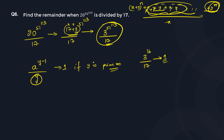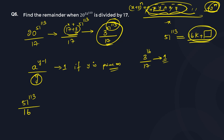But we do not have 3^16 directly. So we will try to convert the power of 3 in terms of 16. We want to find 51^113 — this is the power. Can we write it in the form of 16k plus something? To do that, we need to find the remainder when 51^113 is divided by 16.